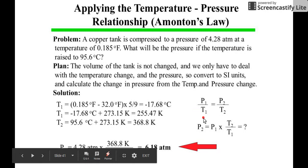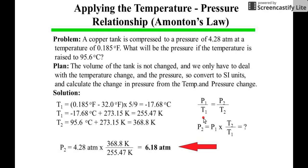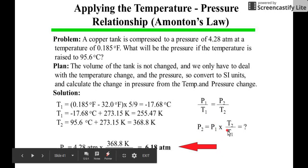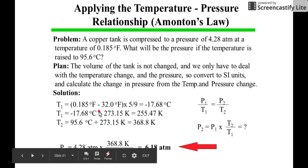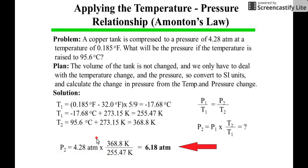Using the equation P1 over T1 equals P2 over T2, and since you're getting P2, P2 becomes P1 times T2 over T1. The units are already okay, so we can substitute them in the equation.